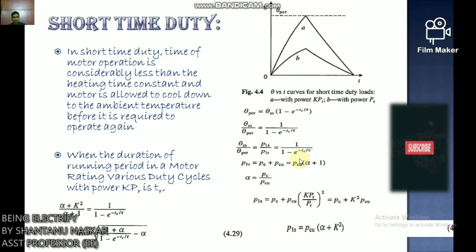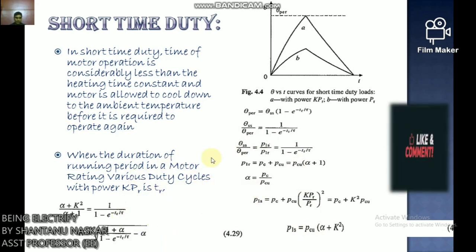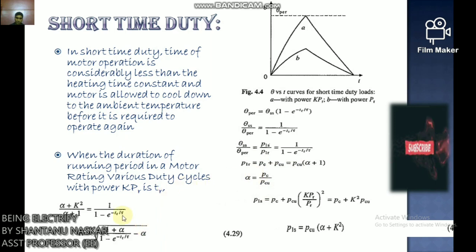Where PC is the load-independent constant loss and PCU is the load-dependent loss, and α = PC / PCU. From these equations, (α + K²) / (α + 1) can be used to calculate the overloading factor K. When constant and copper losses are not known separately, total loss is assumed proportional to power squared, setting α = 0. K is also subject to constraints imposed by maximum allowable current for DC motors and breakdown torque for induction and synchronous motors.